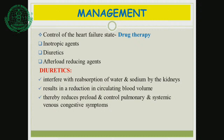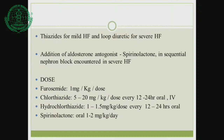Medications include inotropic agents, diuretics, and afterload-reducing agents. Diuretics interfere with reabsorption of water and sodium by the kidneys, reducing circulatory blood volume, decreasing preload, and controlling congestion symptoms. Thiazide diuretics are used for mild heart failure; loop diuretics for severe heart failure. Spironolactone, a potassium-sparing diuretic, can be added at 1 mg/kg/dose, given 2 to 3 times a day until improvement. Chlorothiazide, hydrochlorothiazide, and spironolactone can also be used.